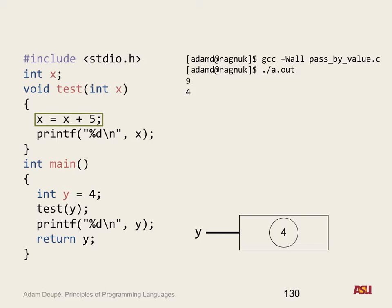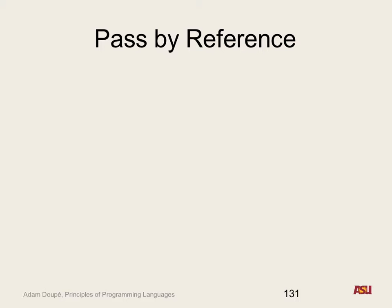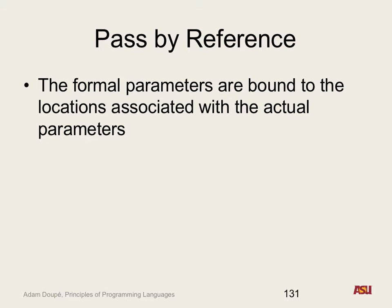Any questions on this? This should be pretty familiar. Now we get to the fun stuff — pass by reference. What's the difference, for those familiar with C++? It passes the address of that variable and directly makes the change at that location. How it does it under the hood doesn't really matter — the point is that when we assign to that variable, we are now assigning to the actual parameter that was passed in.